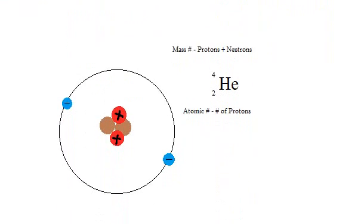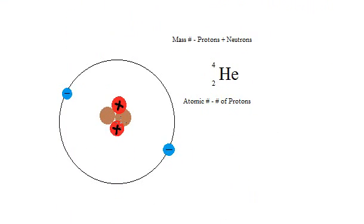Here's a good example right over here. Right here, we have the element helium. Helium has a mass number of 4, an atomic number of 2.